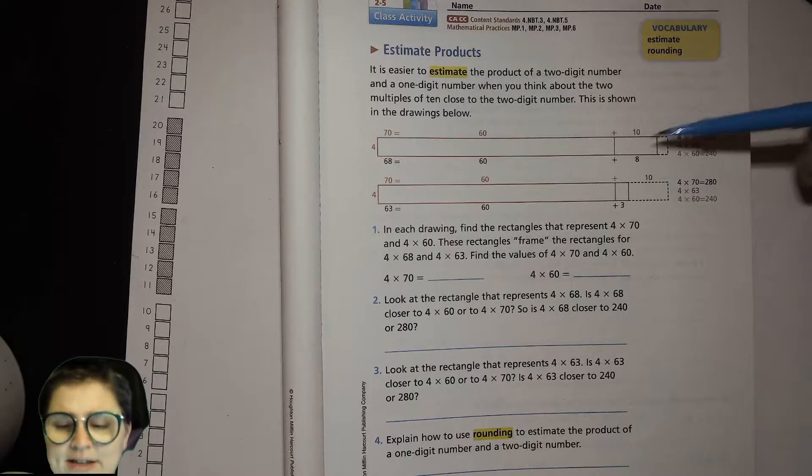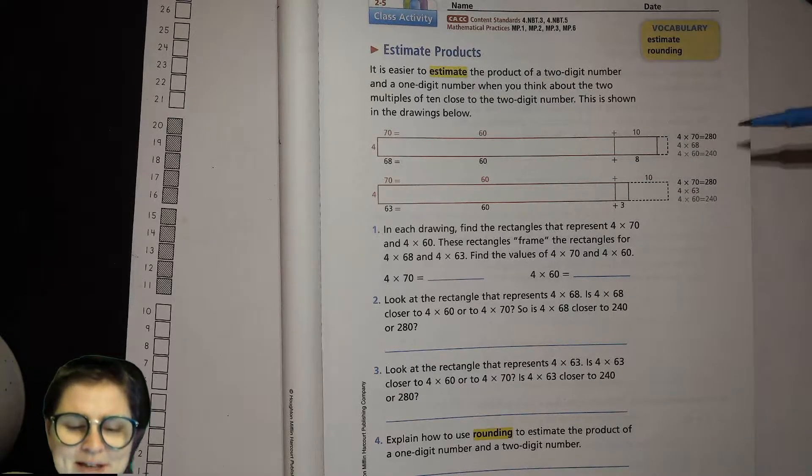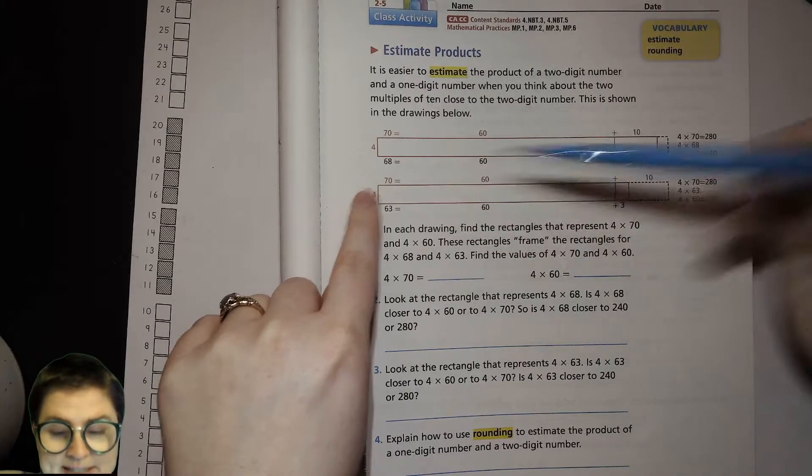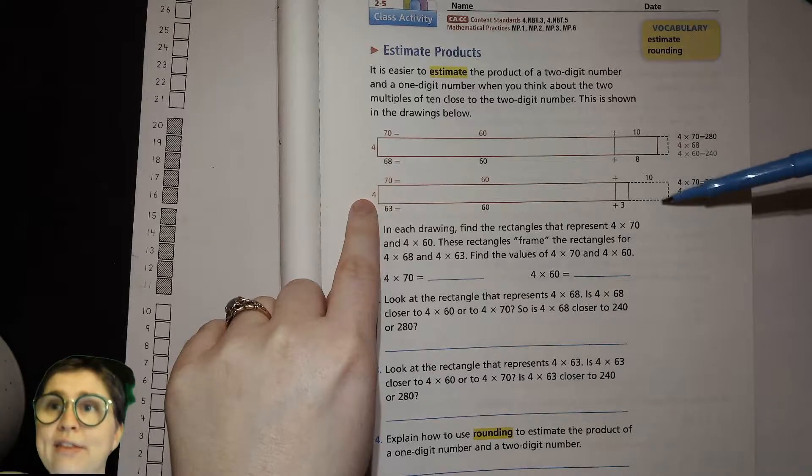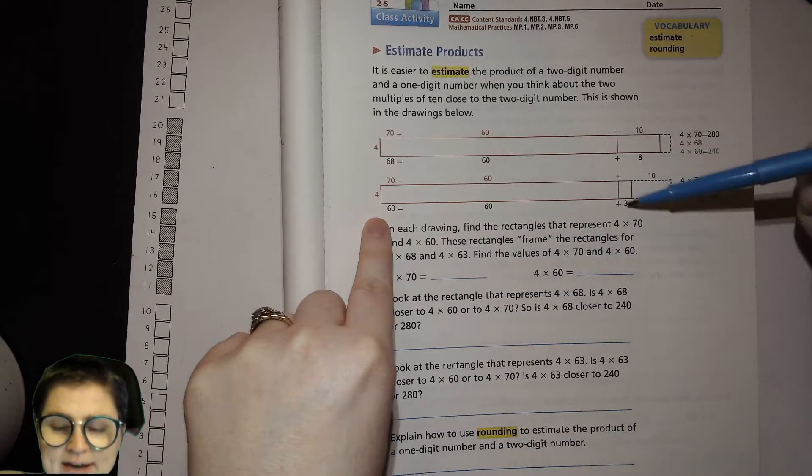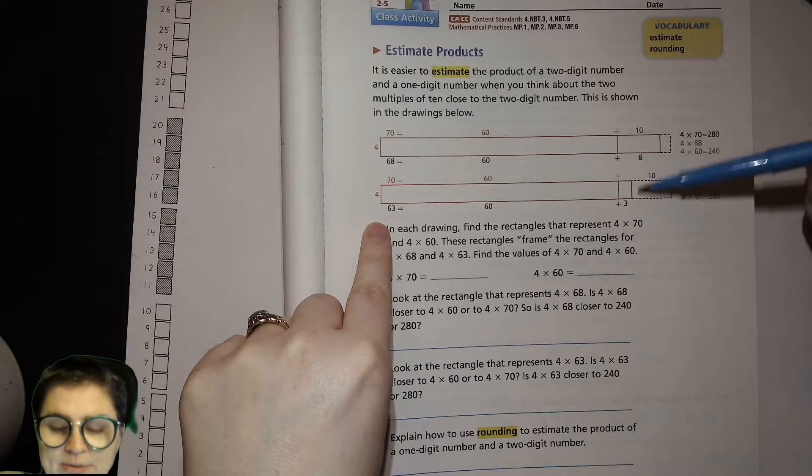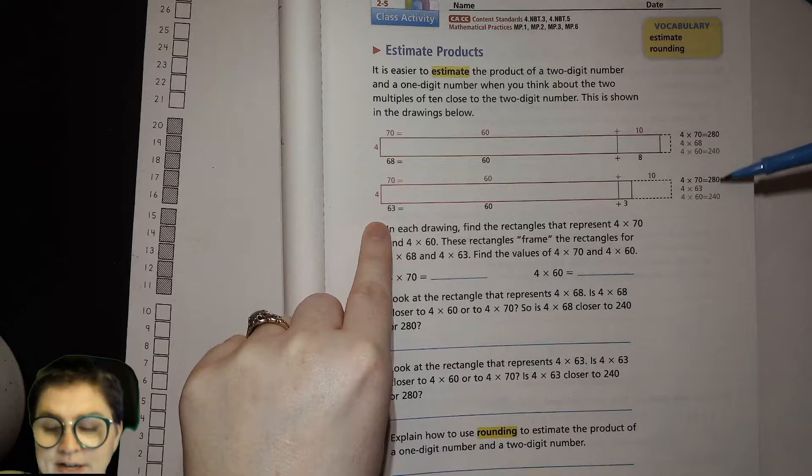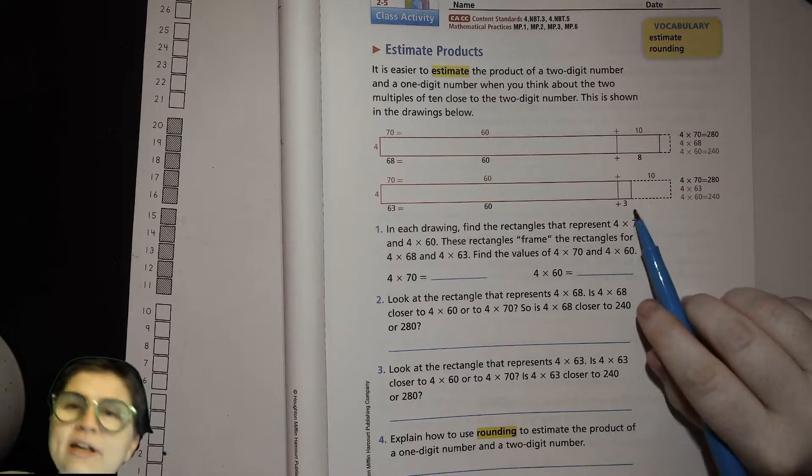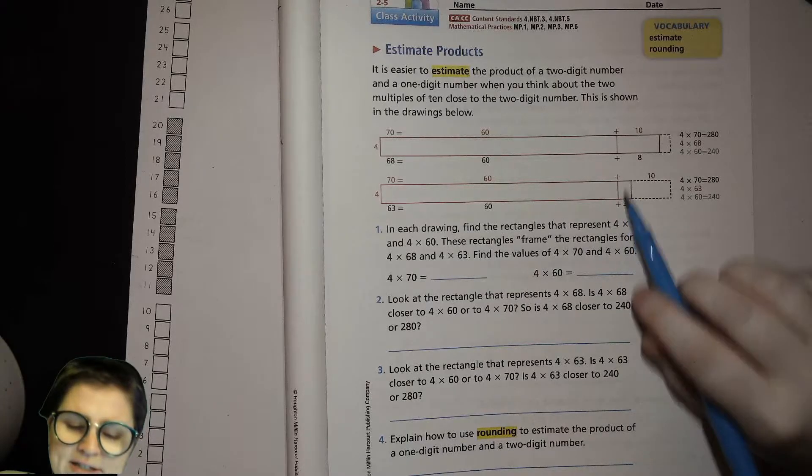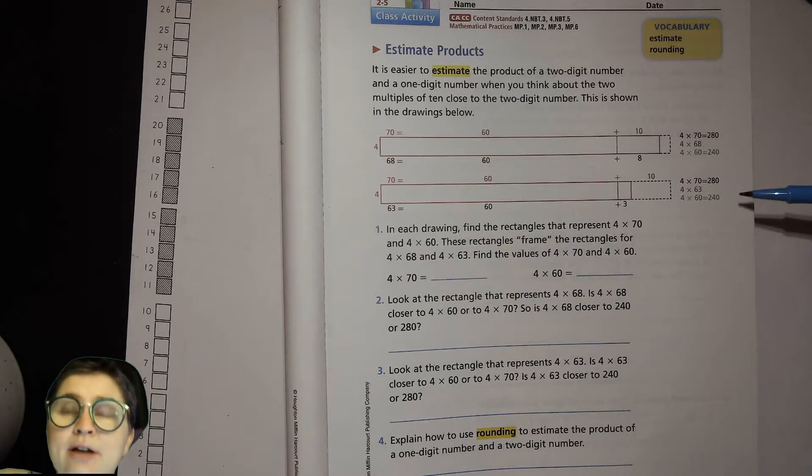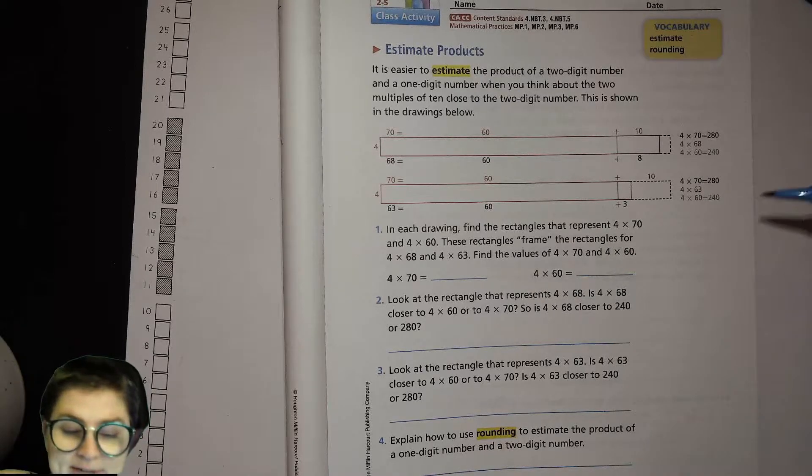Why? Because 8 is a lot closer to 10 than 0, right? All right, let's look at this one with 63. 4 times 63. If we had 4 times 70 that's all the way out here, that dashed black bar. That would be 60 plus 10, or 60 plus 0 which would be right here, and then 60 plus 3 right there, 63. So you know that again it'll be between 280 and 240, but what would it be closer to? Probably closer to 240 because 3 is a lot closer to that additional 0 than the additional 10, right?